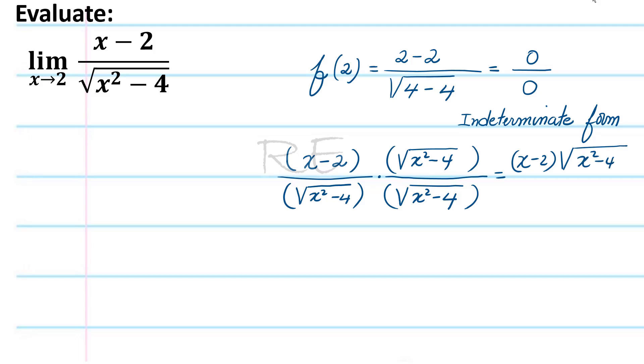So the numerator will not change, but the denominator will become x squared minus 4, which is square root of x squared minus 4 squared.